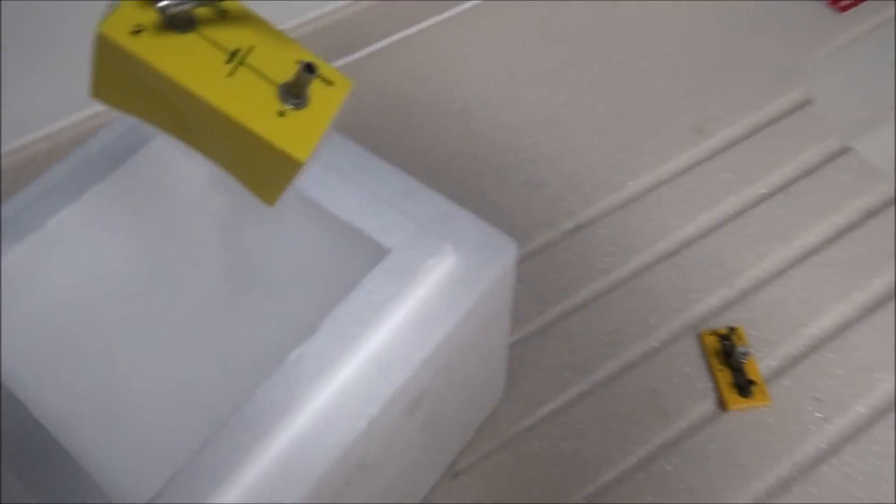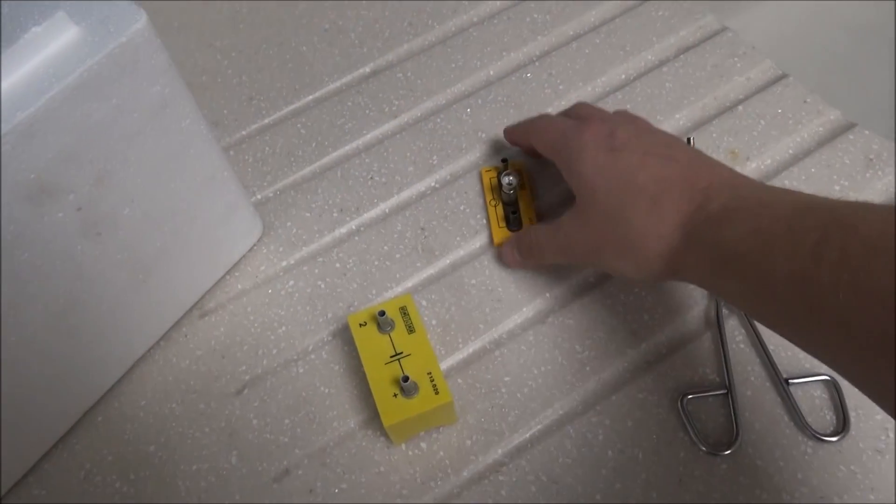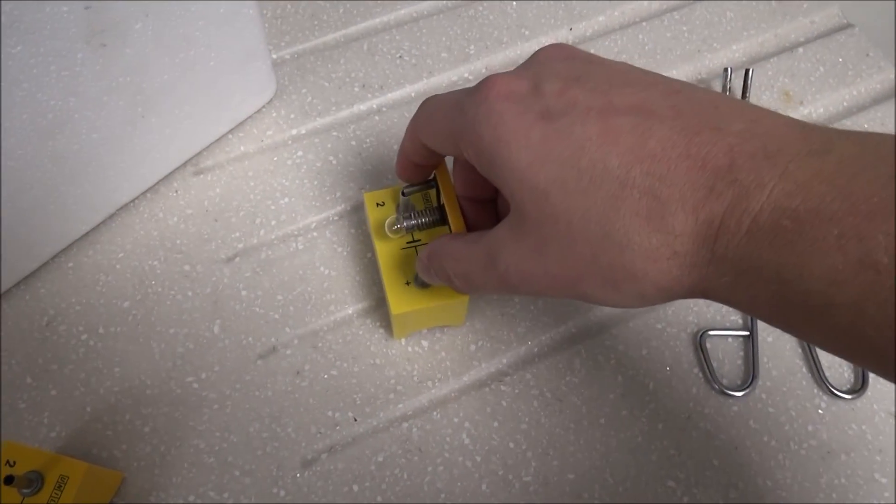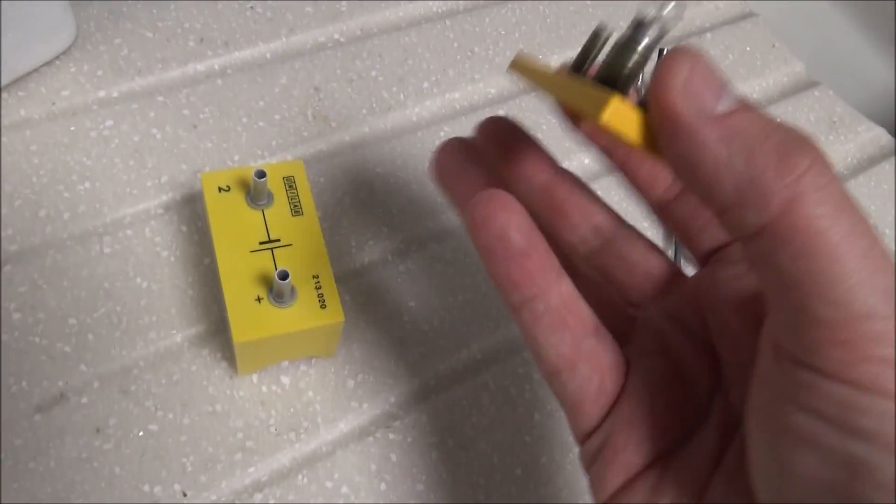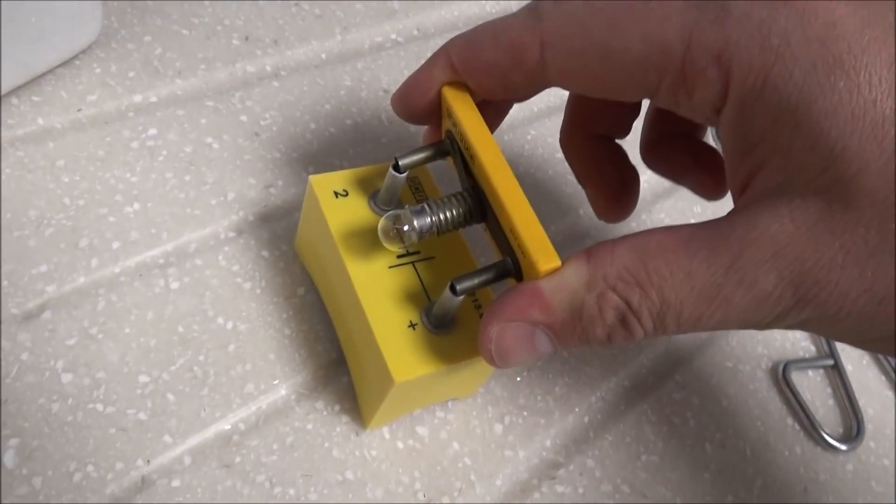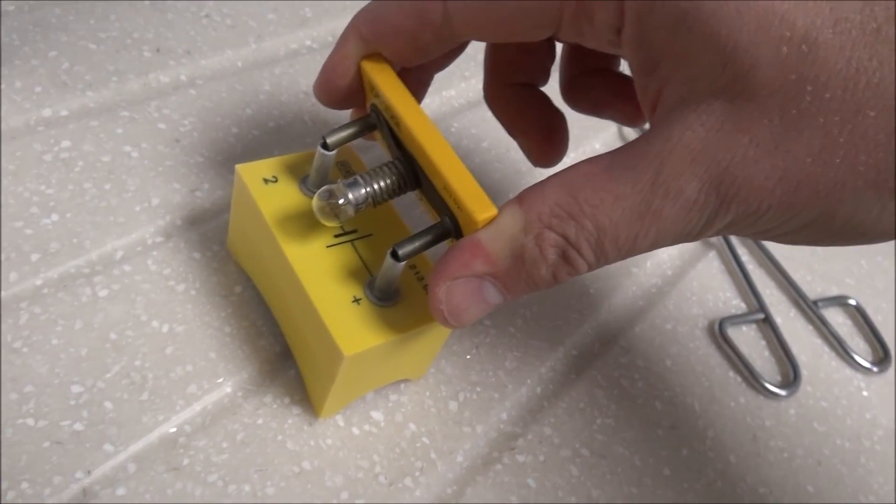Now when I take this out, the cell is really cold. If I try and light it, nothing happens. Again, it's the same circuit, but this time the opposite effect happens. Why is that? Well, what we're doing is slowing down the rate of a chemical reaction.